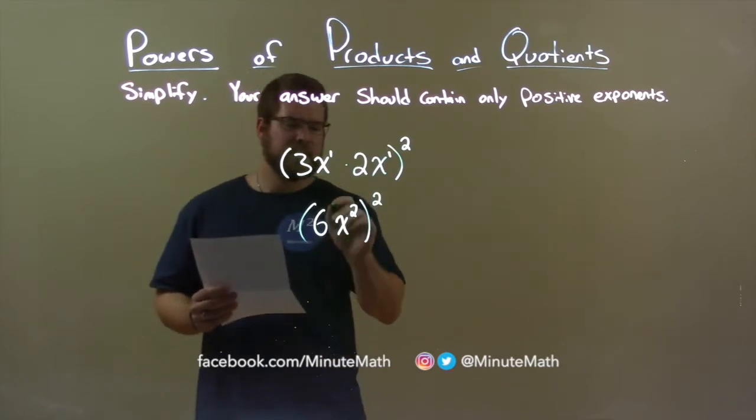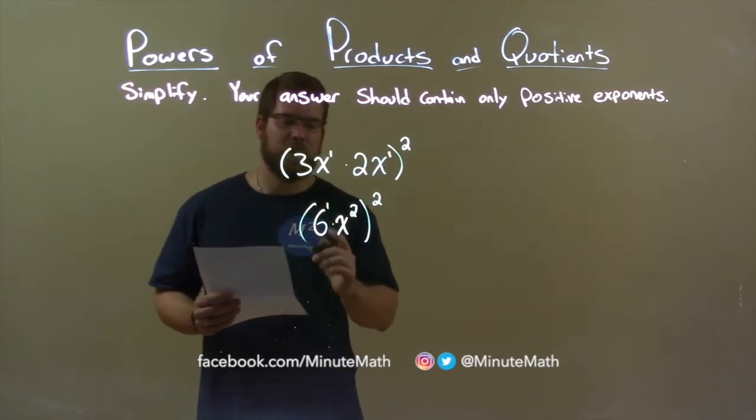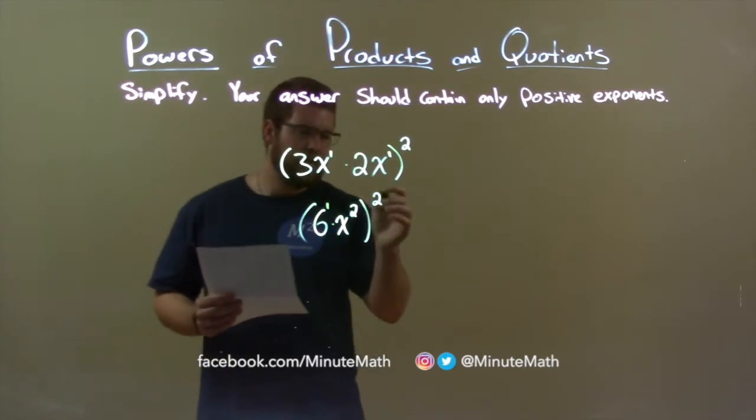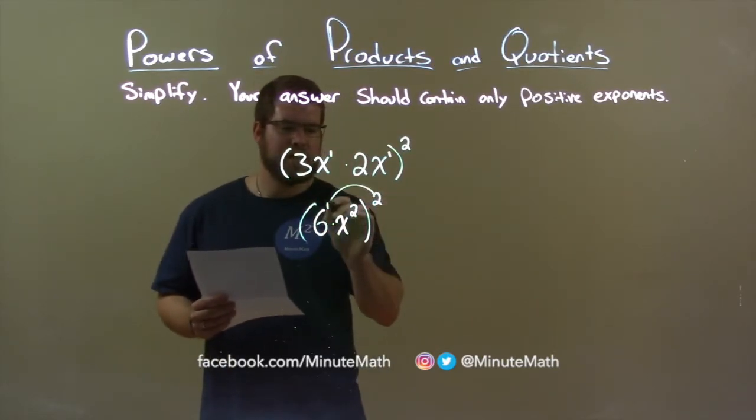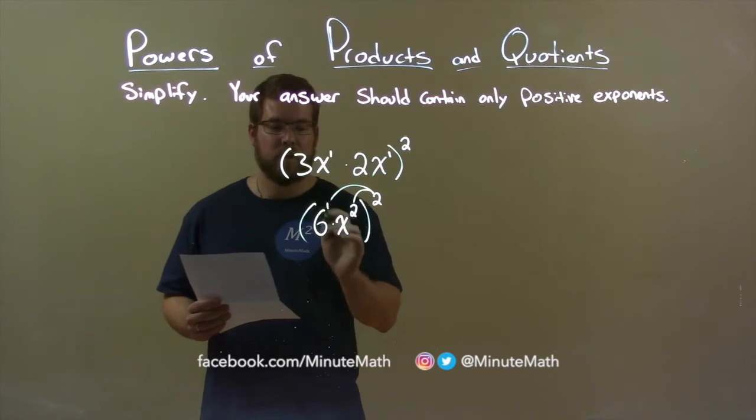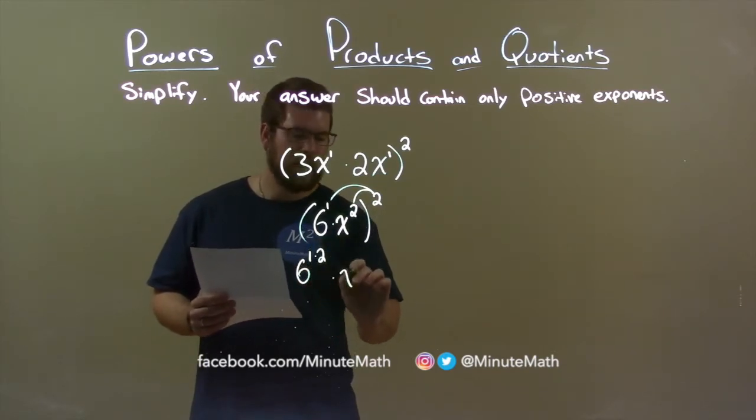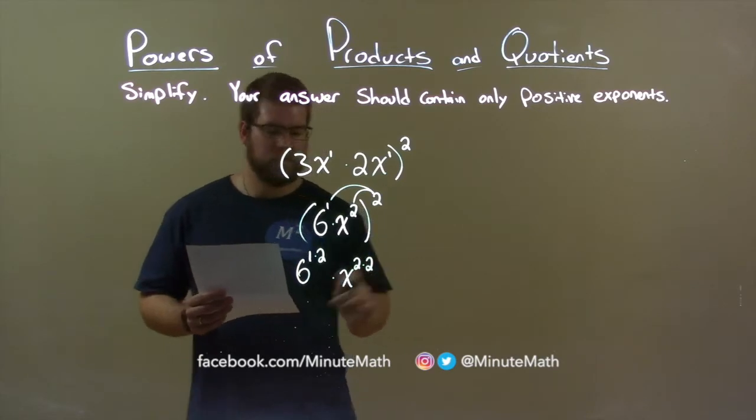6 here is really 6 to the first power. We've got multiplication between 6 and x squared. To distribute the exponent, the second power, we multiply that to each exponent. So now we have 6 to the 1 times 2 power, times x to the 2 times 2 power. Okay?